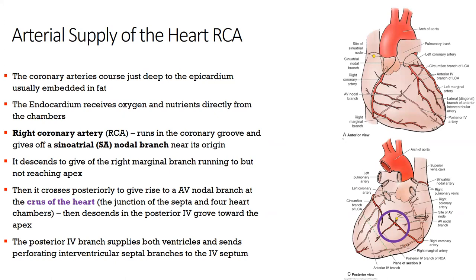Coronary arteries are located just below the epicardium because they supply the muscle layer, the myocardium. They're typically embedded in fat, which is normal externally. The endocardium gets oxygen and nutrients directly from the blood within the chambers. So if asked what layers of the heart are supplied by coronary arteries, the answer is the epicardium and myocardium. The endocardium primarily gets oxygen from the blood inside the chambers.